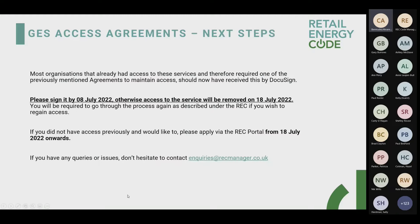Most organizations that had access to the service previously would have received their access agreement by now, and if not it's on its way and will be received shortly via DocuSign. Please sign by the 8th of July — otherwise access to the service will have to be removed on the 18th of July and you'll need to go through the process to regain access. If you did not have access previously and would like to apply, you can do so via the REC portal from the 18th of July onwards. Contact us at inquiries@recmanager.co.uk with any questions.